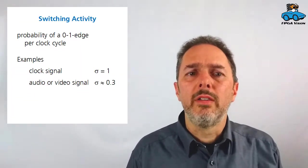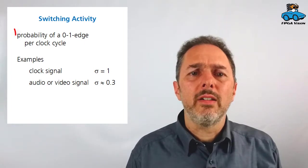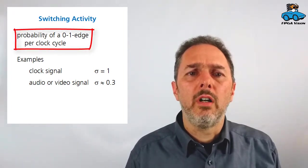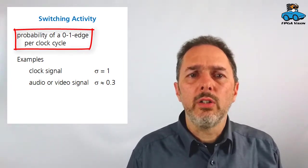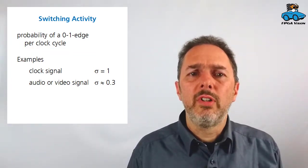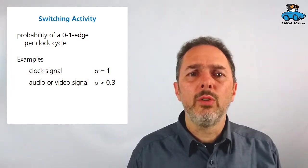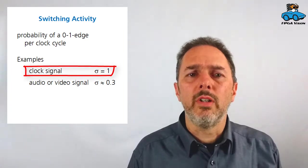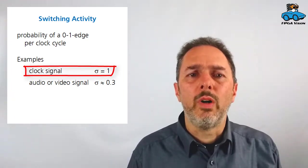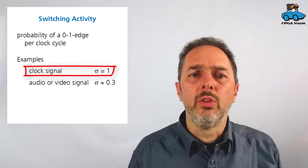So capacity, voltage, frequency, these are probably things that are well known for you. But switching activity might be new. So let's have a closer look at this variable. It is defined as the probability of a zero to one edge during a clock cycle, and it's a statistical value. For some signals you can easily calculate this value. So let's have a look at a clock signal. The clock changes its value from zero to one and back from one to zero for every cycle. So sigma is one.